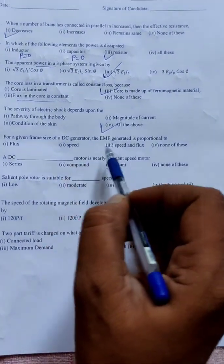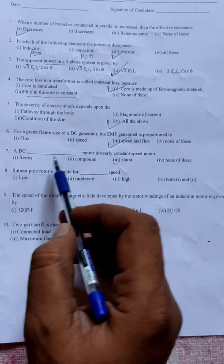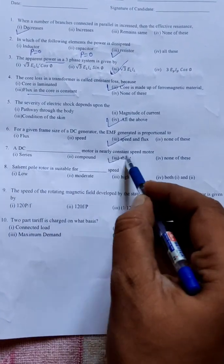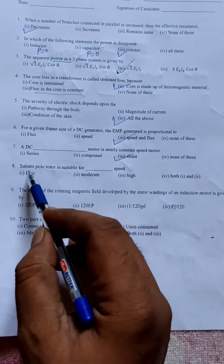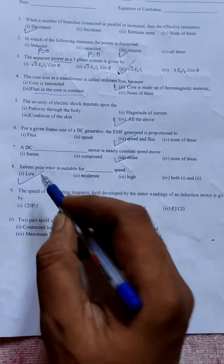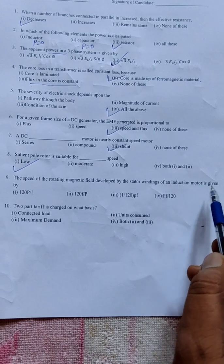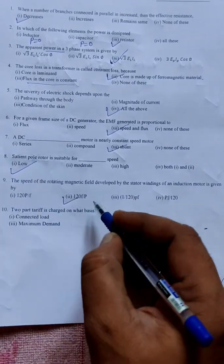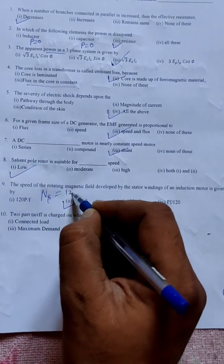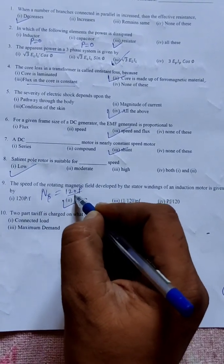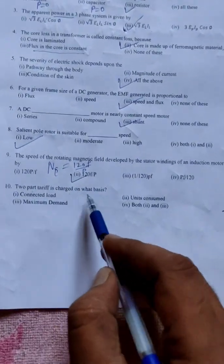For a given frame size of DC generator, the EMF generated is proportional to speed and flux. Repeated question. A DC shunt motor is nearly a constant speed motor. Salient pole rotor is suitable for low speed alternator. Repeated question. The speed of rotating magnetic field developed by the stator winding of an induction motor is given by 120 f by p. The speed of rotating magnetic field is called synchronous speed. Its formula is 120 f by p.